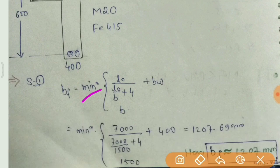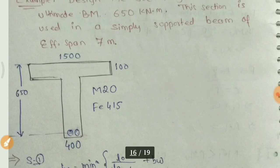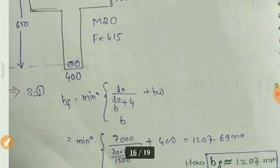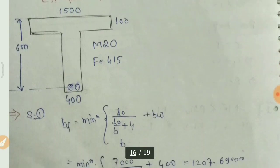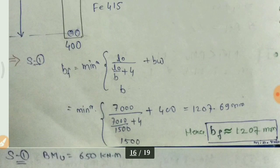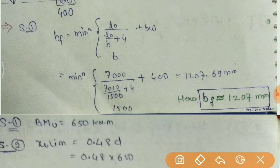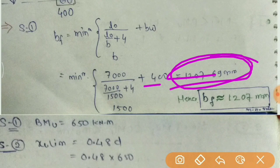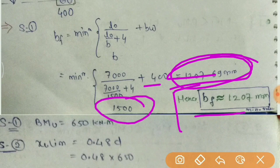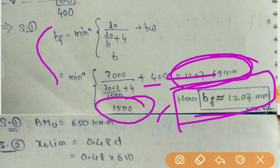bf = minimum of (l0/6 + bw + 6df, b) — formula है। l0 = 7000 mm (effective span), b = 1500 mm। ऊपर वाले का: l0/6 + bw + 4 = 1207.69 mm। नीचे वाला: 1500 mm। Minimum = 1207 mm। तो bf = 1207 mm।